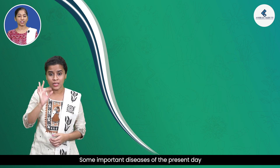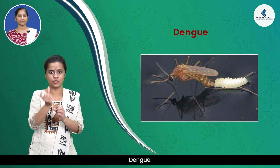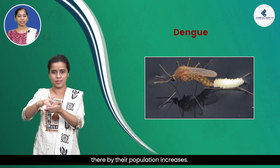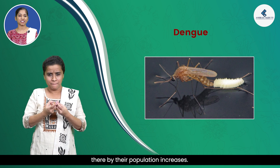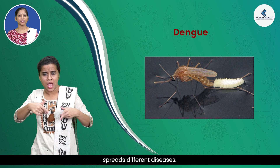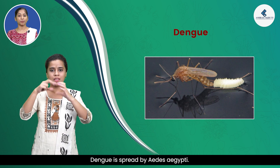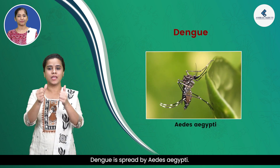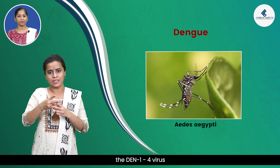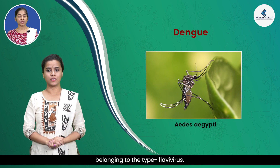Some important diseases of the present day: Dengue. Mosquitoes lay their eggs in waterlogged places, and thereby their population increases. Different species of mosquitoes spread different diseases. Dengue is spread by Aedes aegypti and is caused by the DEN1-4 virus belonging to the type Flavivirus.